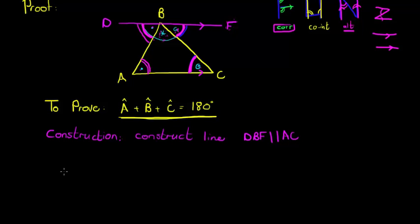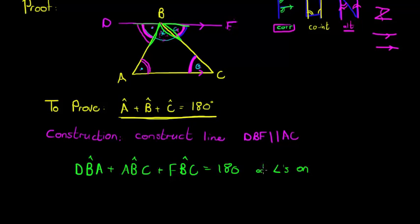So here I would say that DBA plus ABC plus FBC equals 180. So DBA is this one here, ABC is that one there, and FBC is this one here - they add up to 180. Why? Adjacent angles on straight line.